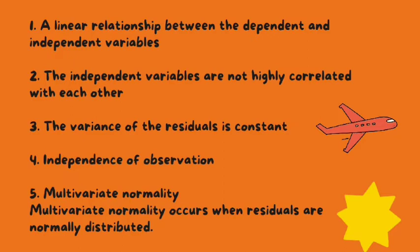When independent variables show multicollinearity, there will be a problem figuring out the specific variables that contribute to the variance in the dependent variable. The best method to test the assumption is the variance inflation factors method.